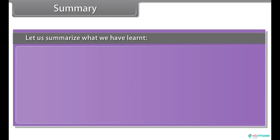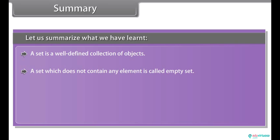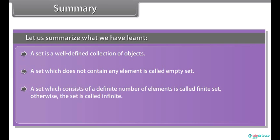Summary. Let us summarize what we have learned. A set is a well-defined collection of objects. A set which does not contain any element is called empty set. A set which consists of a definite number of elements is called finite set. Otherwise, the set is called infinite. Two sets A and B are said to be equal if they have exactly the same elements.